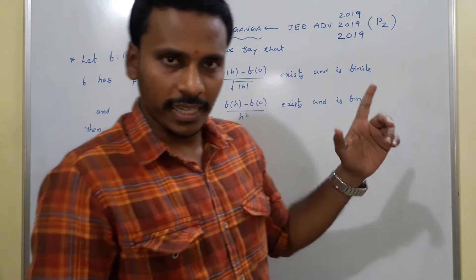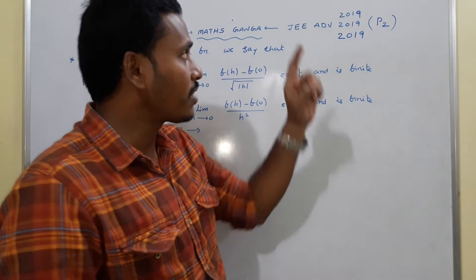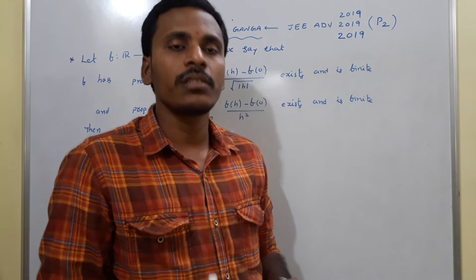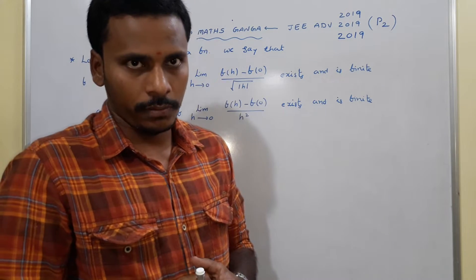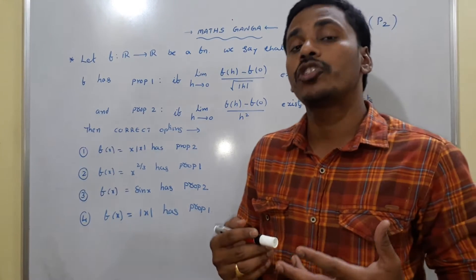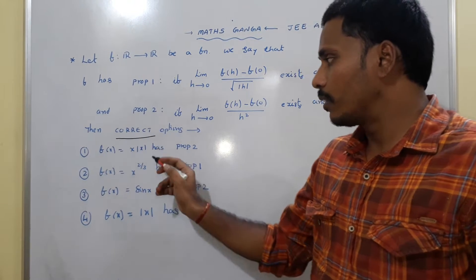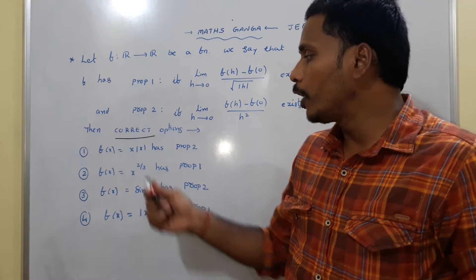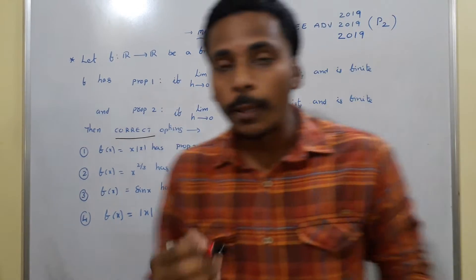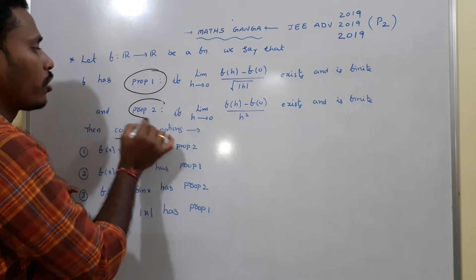Hello friends, this is Gandhader from Maths Gandhader. This is another question from JEE Advanced 2019 Paper 2, Section 1, which is a more than one answer type question. We need to go with the information given in the question and check which of the following given options are correct. There are four options, and we need to check which functions satisfy Property 1 and Property 2 as mentioned in the question.